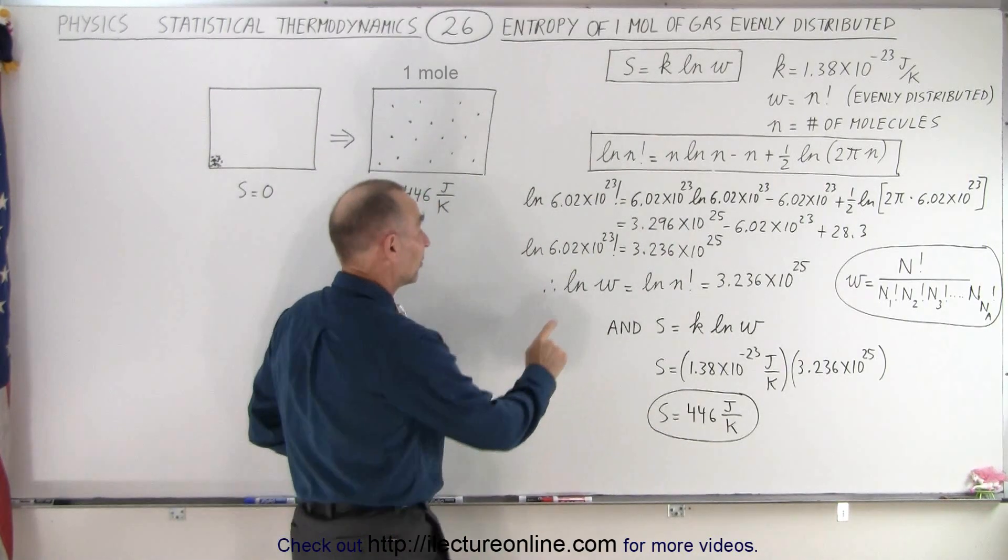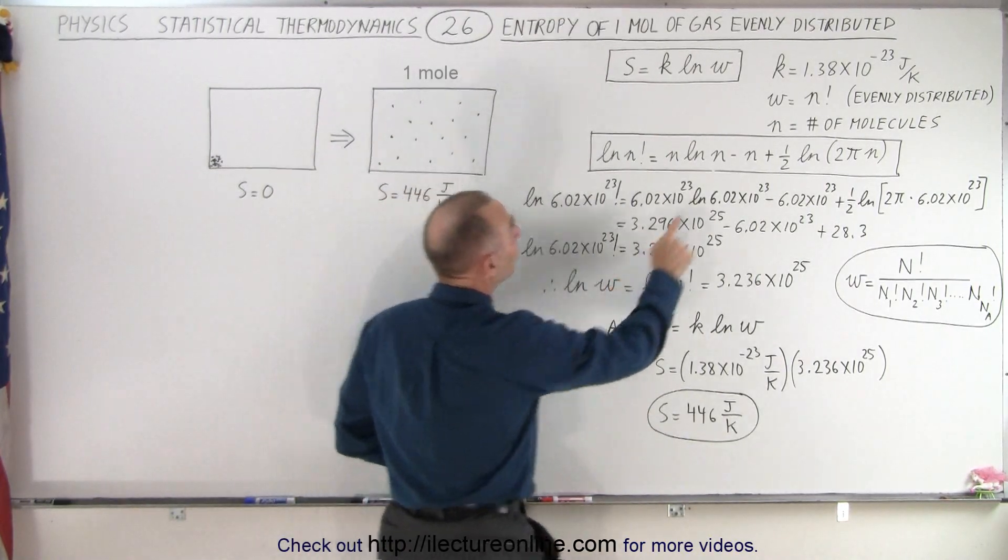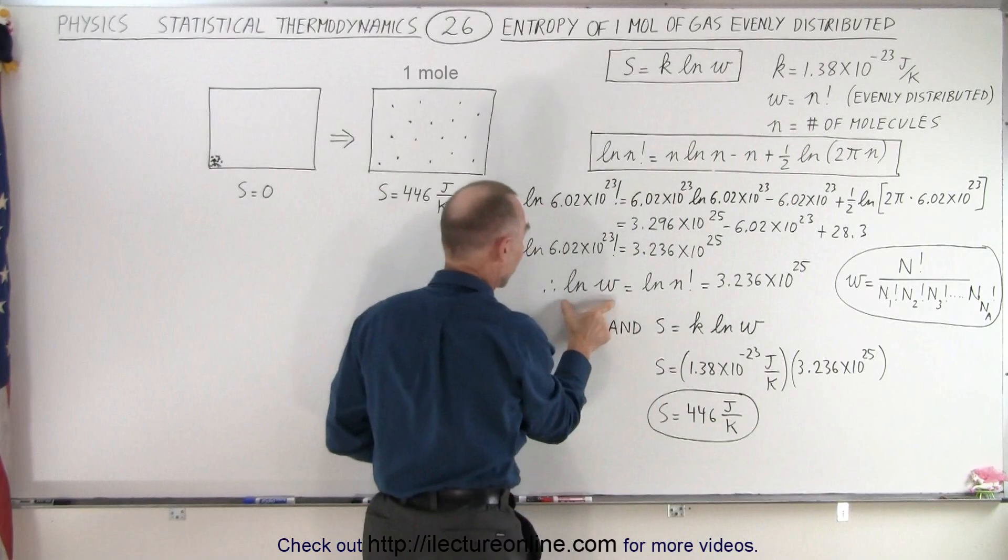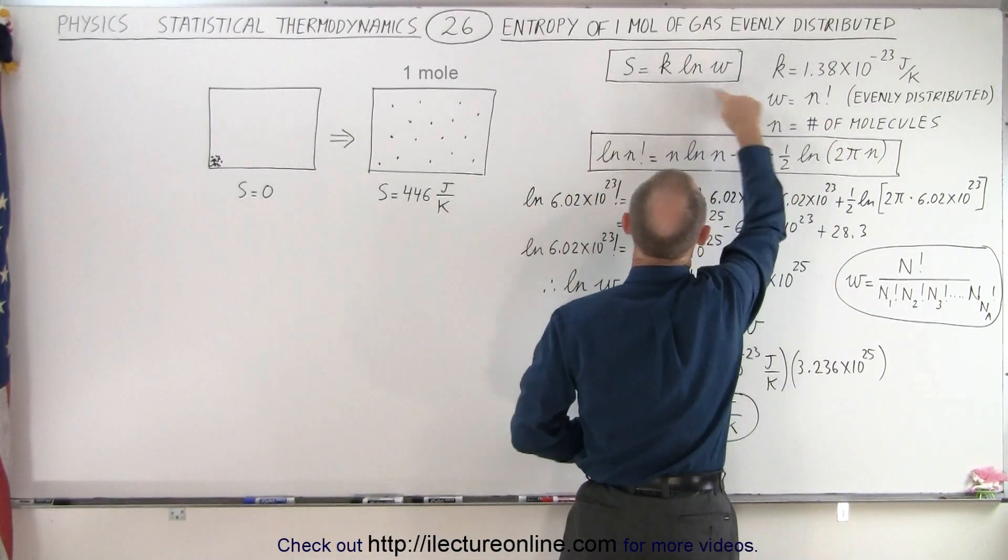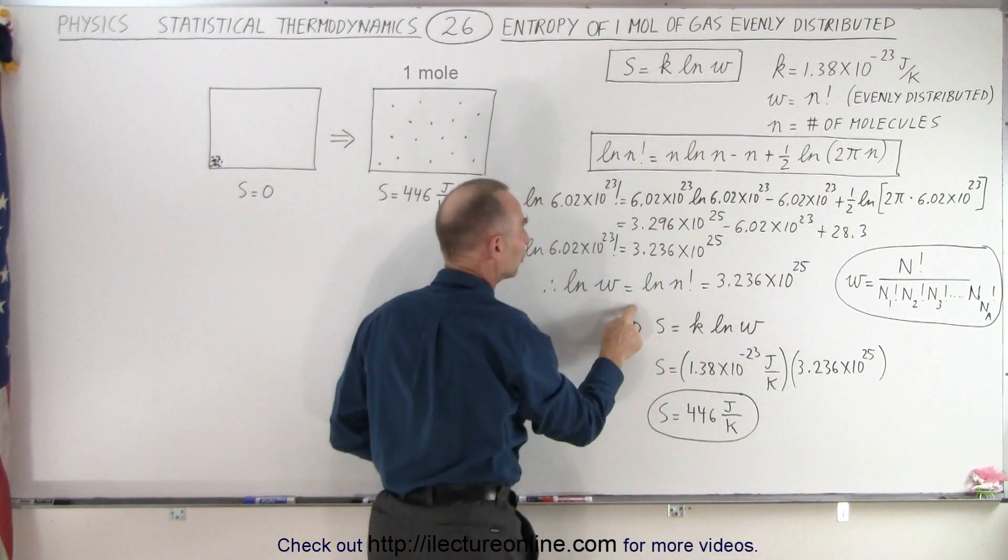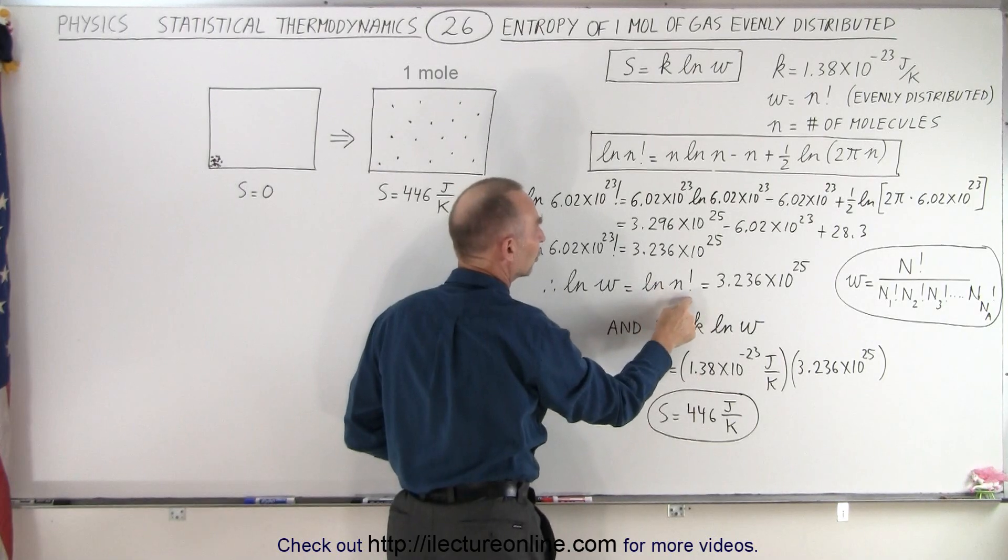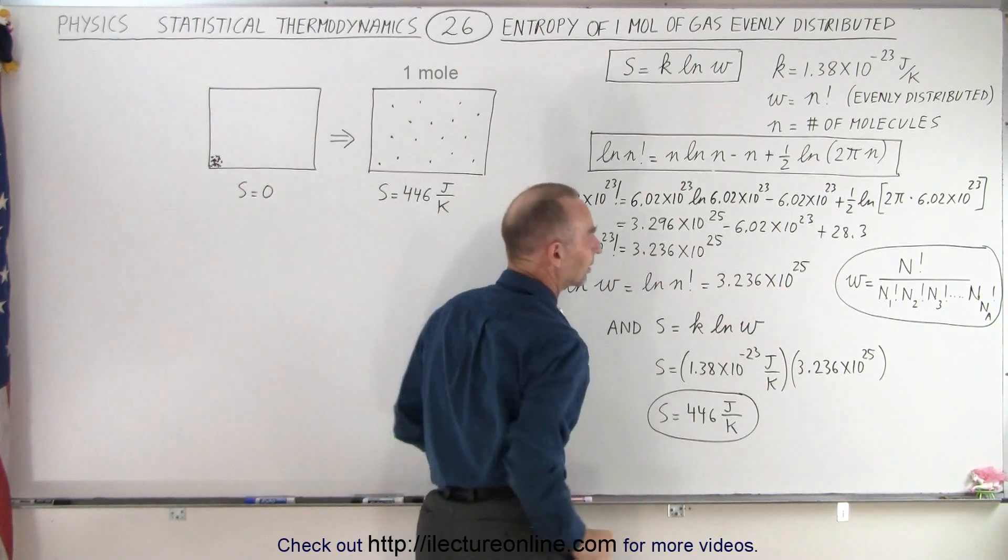Now, that means that the natural log of W, again W is equal to n factorial, the natural log of that, which goes into our equation right here, is equal to the natural log of n factorial, which is equal to this number we just calculated.